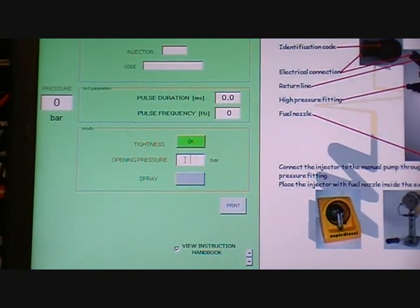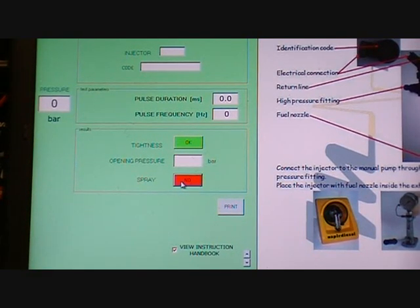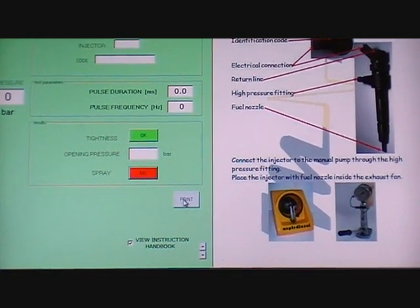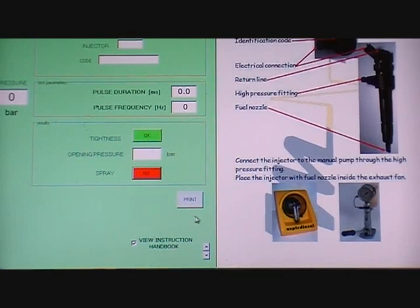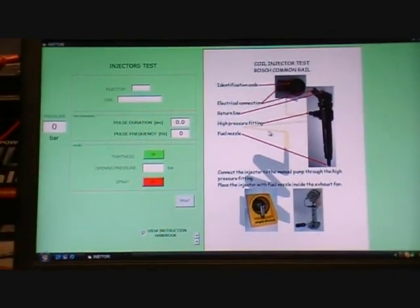You can insert the opening pressure when you test the injector and see what pressure it's opening at. Key it in here and say okay or not okay for the spray pattern. Then you can print this, save this to show to your customer, and also then here you have information about how to test the injector.